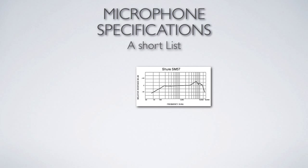Talking about microphones specifically today, we're going to look at their specifications. What we're looking at here is a chart that shows how the microphone responds to different frequencies. In a perfect microphone, we'd have a flat line from 20 to 20,000 cycles.